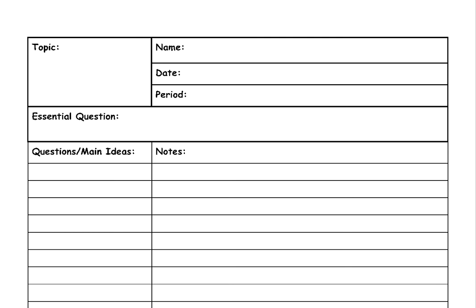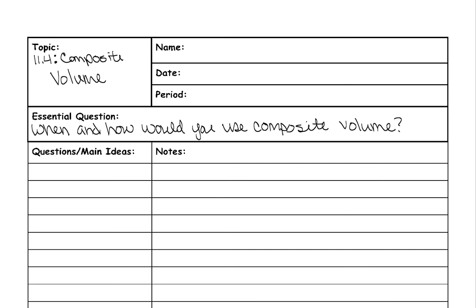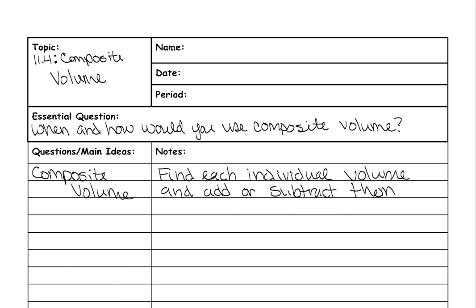Today we're going to cover composite volume. Your essential question is: when and how would you use composite volume? Composite volume involves two or more three-dimensional shapes put together to make one total three-dimensional shape. To find the composite volume, you find the volume of each individual shape and then either add or subtract them together depending on what type of problem it is.